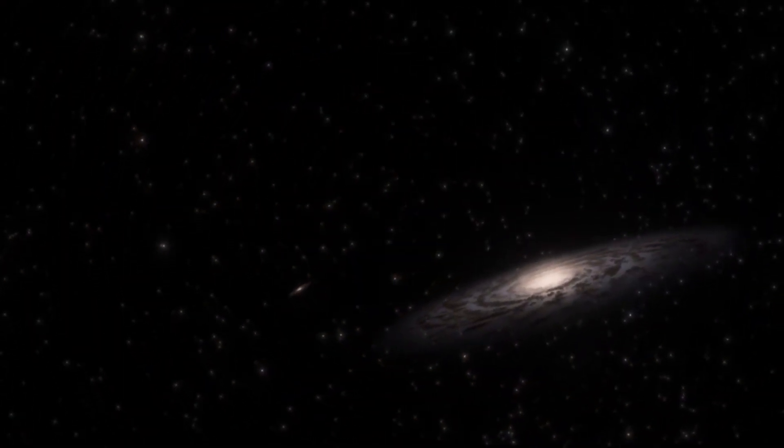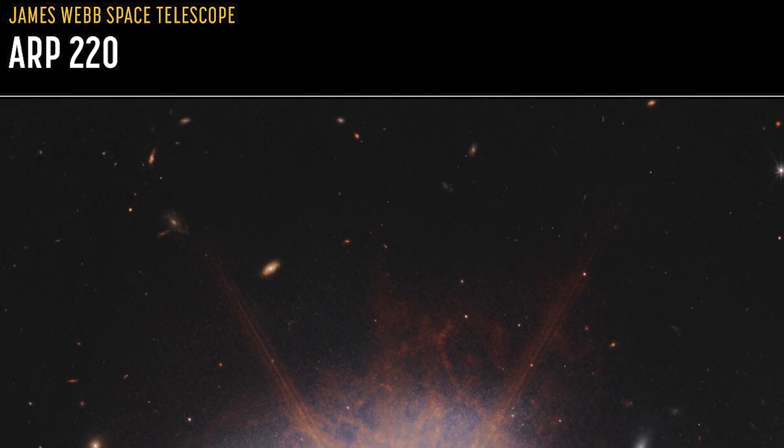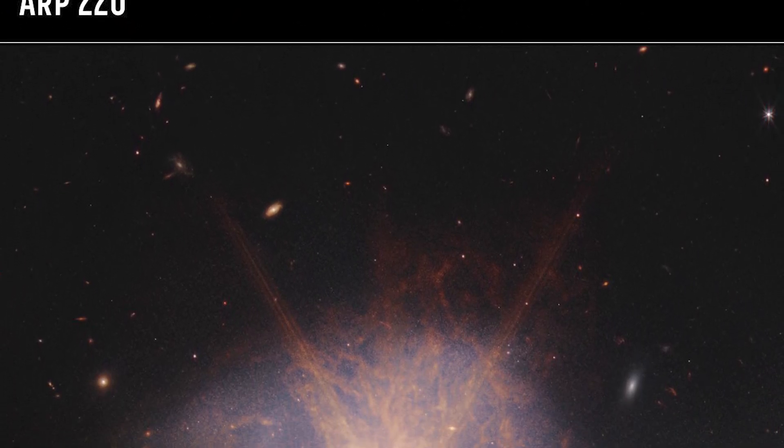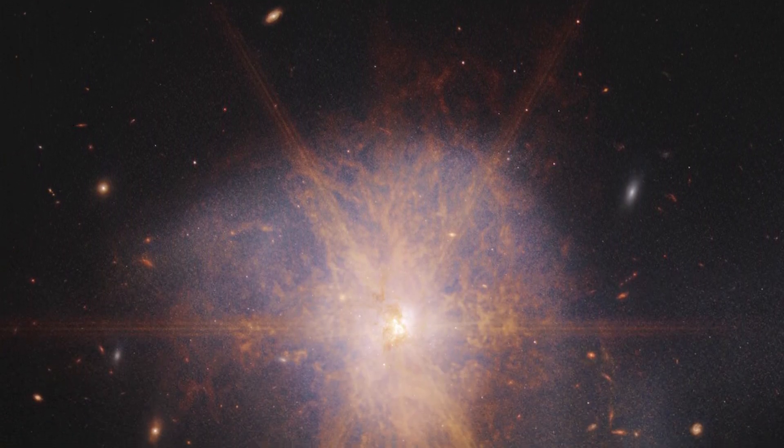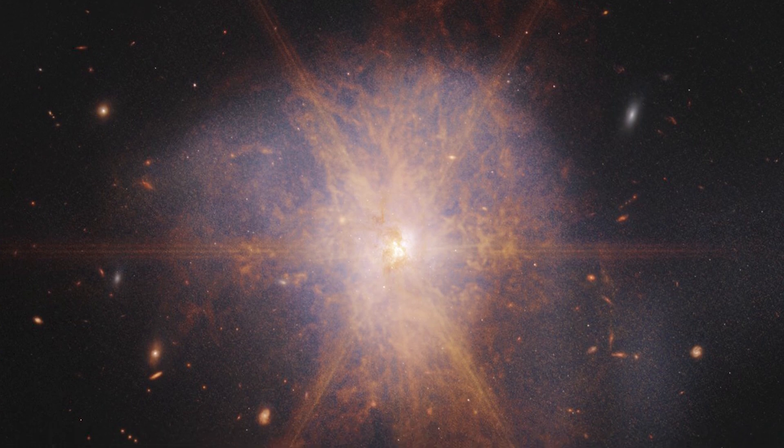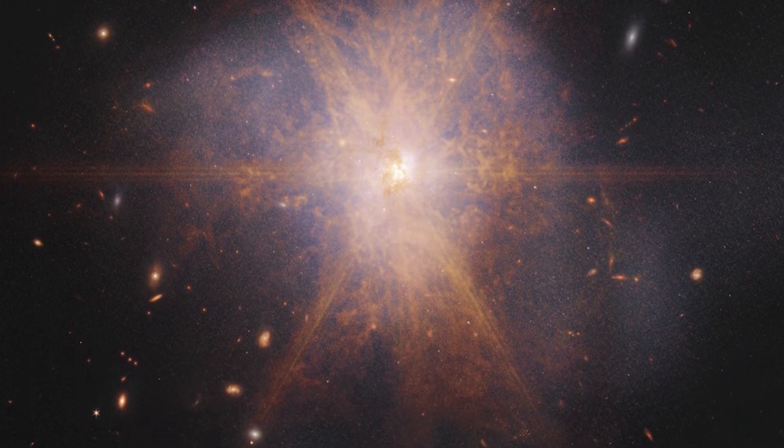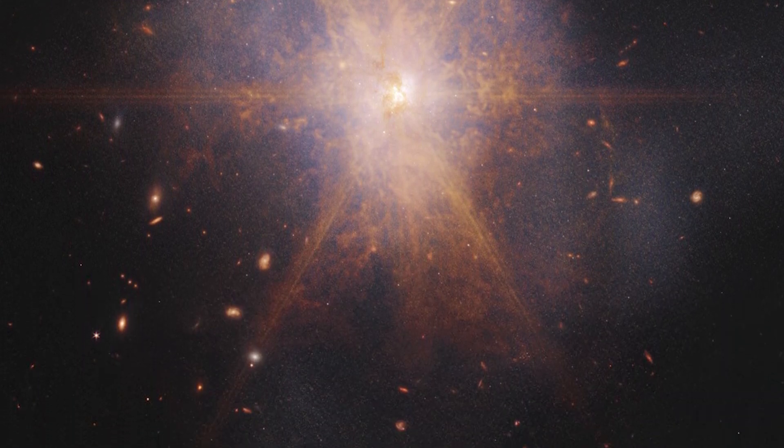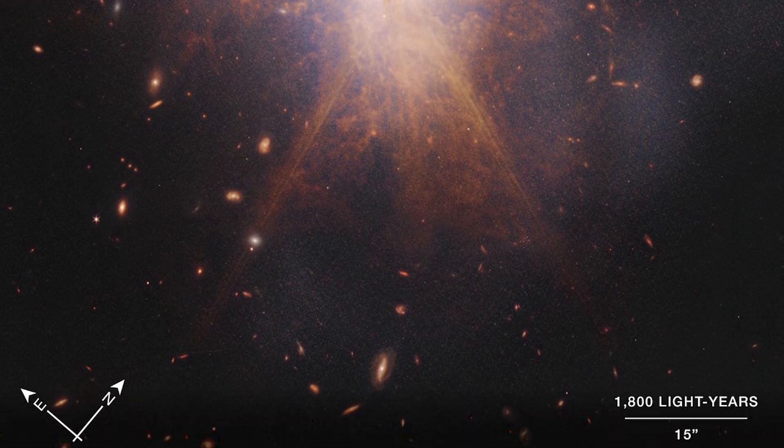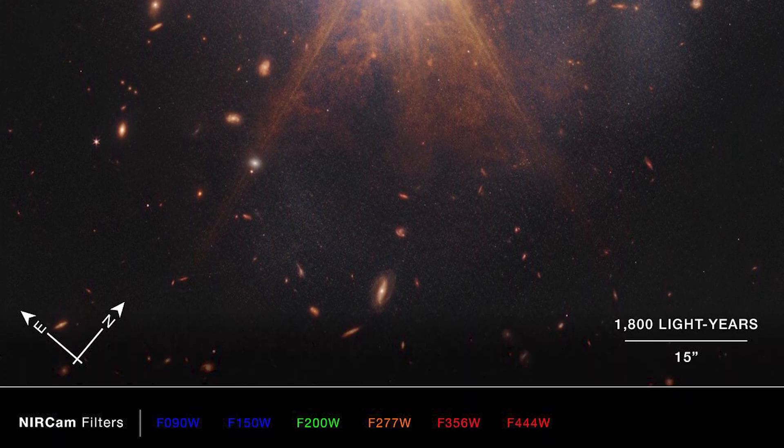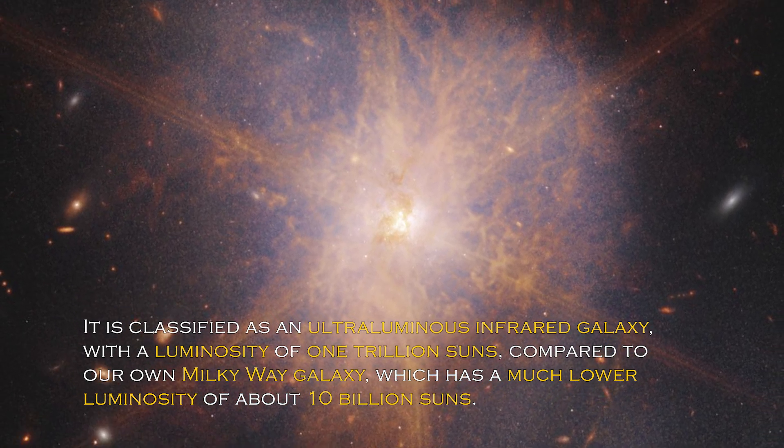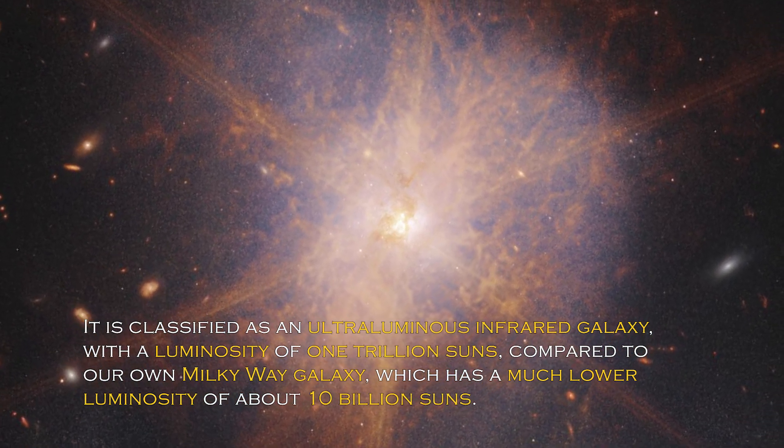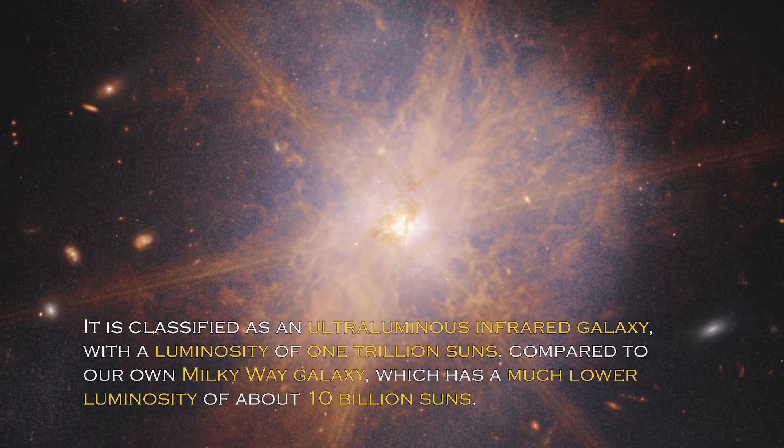NASA has made an exciting announcement about the galactic merger ARP 220, which was captured by the James Webb Space Telescope. This impressive galactic merger can be seen shining among other galaxies in the night sky. When two spiral galaxies merge, the phenomenon known as ARP 220 shines brightest in the infrared, making it perfect for observation by the James Webb Space Telescope. It is classified as an ultra-luminous infrared galaxy, with a luminosity of trillion suns compared to our own galaxy, the Milky Way, which has much lower luminosity of about 10 billion suns.